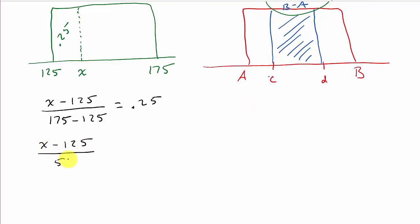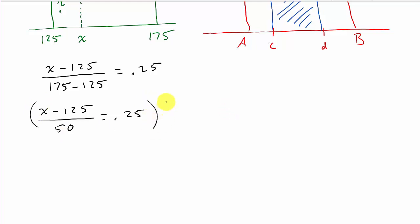So this is going to give us X minus 125 over 50 equals 0.25. And then if I solve this, I multiply everything by 50, so the 50s would cancel here and I'd be left with X minus 125. I've got to multiply the 50 to both sides, and then I've got equals 50 times 0.25.